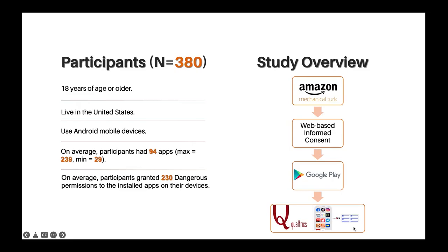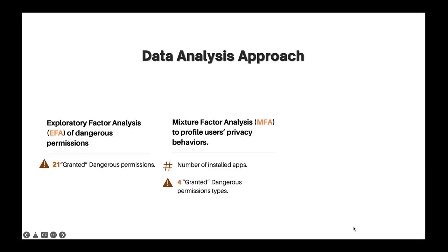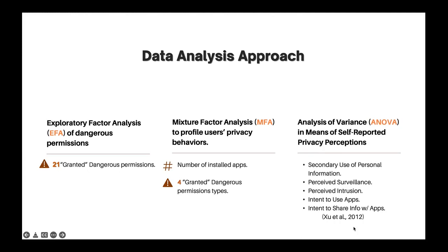380 participants were able to successfully complete the study. For the data analysis, to address RQ1, we applied exploratory factor analysis for the 21 dangerous permissions to reveal the underlying factor of these permissions based on users' behaviors. To create the privacy profiles for RQ2, we used two privacy behavioral measures, which were the number of installed apps and the granting permissions behavior. We conducted a series of mixture factor analysis in order to create these profiles. To answer RQ3, we investigated the differences in the self-reported measures between the generated privacy profiles by conducting a series of Welch ANOVA tests.